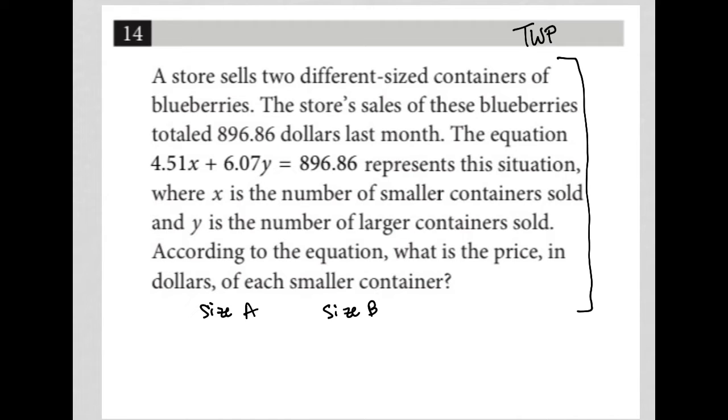Last month, the equation - so I was going to write an equation, but I see the next sentence says the equation, so I won't. The equation 4.51X plus 6.07Y equals 896.86. So this is actually size X, we'll call it, and this is size Y instead of A and B.